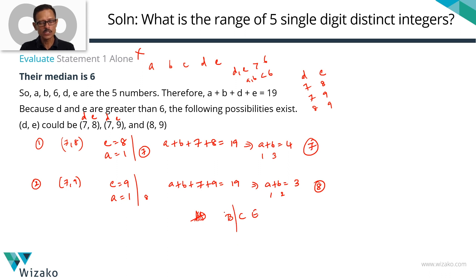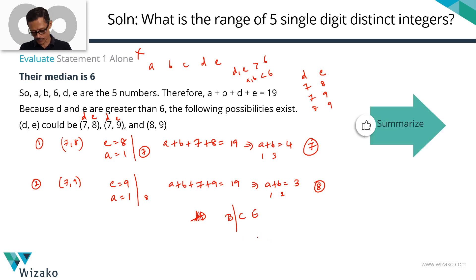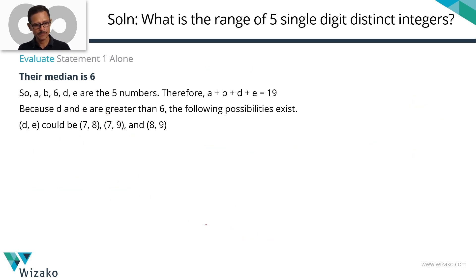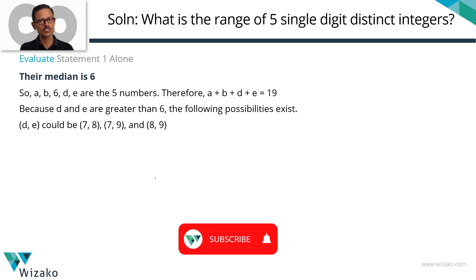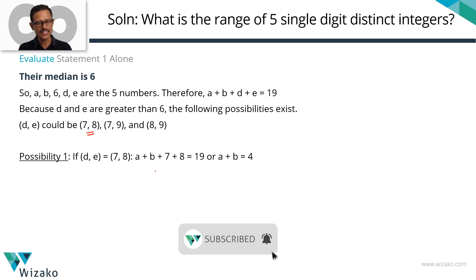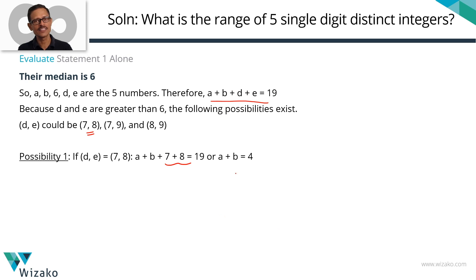Let's evaluate statement 2 alone. Statement 2 says the average of the three largest among these five numbers is 7. The three largest numbers are c, d, and e. Their average is 7, which means c + d + e = 21.